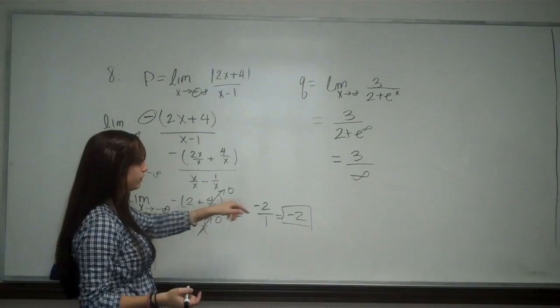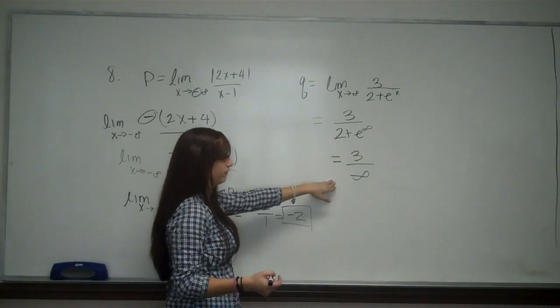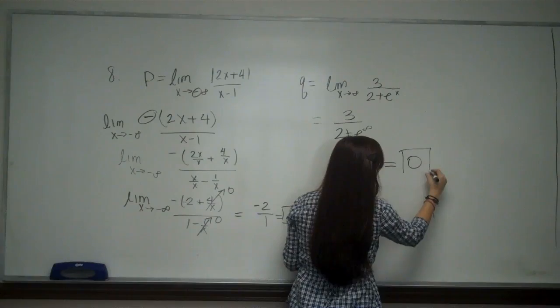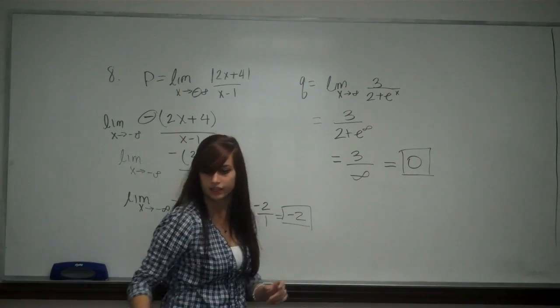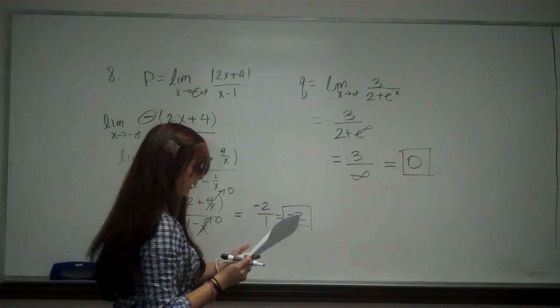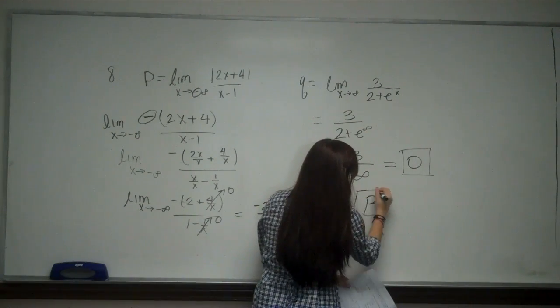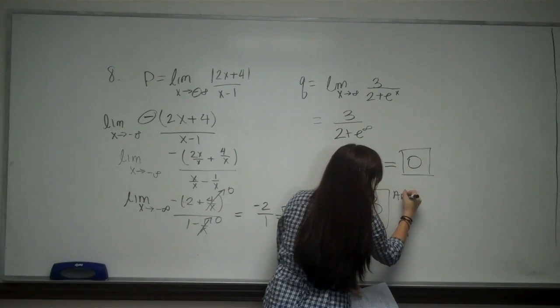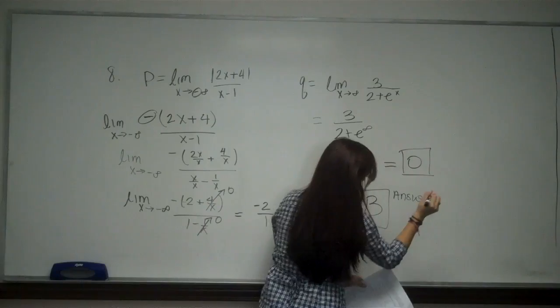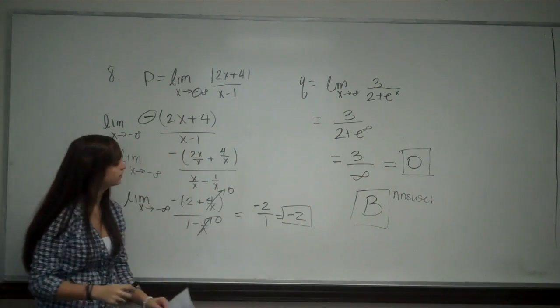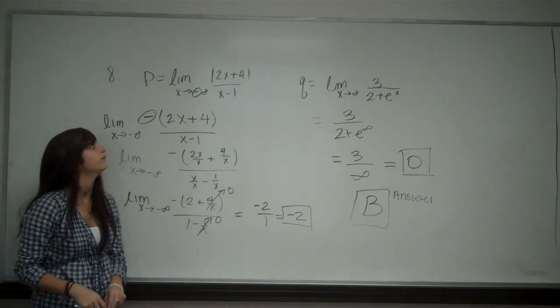Now, same as in this case, when I have a smaller number divided by a really big number, this limit is going to approach 0. And I believe that this answer choice is B. This is your answer. This is number 8.